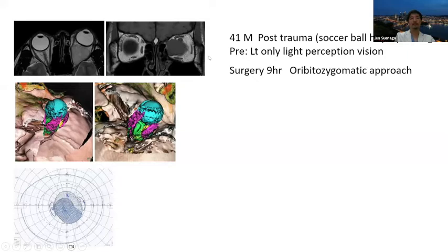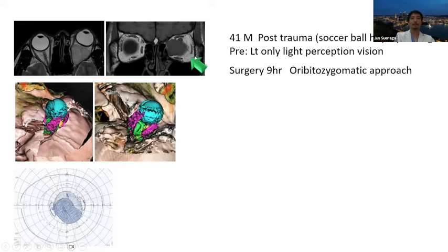In this case, I use the trans-orbital zygomatic approach because the optic nerve is in a position where this direction is very suitable. After surgery, his visual function improved. This is the same method — a zygomectomy with an L-shaped incision. Using a chisel, the L-shaped zygoma is removed and preserved. The temporal muscle is positioned inferolaterally, and a gutter is made to the orbital rim.